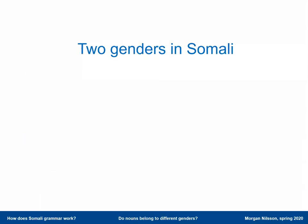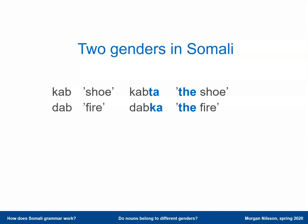So after this introduction, I want to show you that Somali has two genders. There is one gender where the definite article is 'ta,' and the definite article in Somali is added to the end of the noun as a suffix. So 'the shoe' is 'kaabta,' with 'ta' as the definite article. And 'fire' — 'dab' — takes another definite article, 'ka': 'dabka,' the fire. So we have these two genders in Somali: words that take the definite article 'ta,' and words that take the definite article 'ka.'